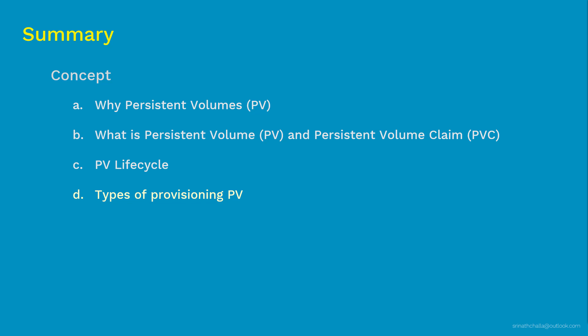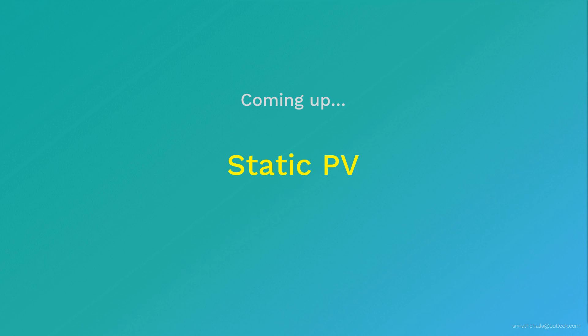Finally, we discussed two types of provisioning: static and dynamic. In static provisioning, the persistent volume must be created before the persistent volume claim. In dynamic provisioning, persistent volumes are created simultaneously when the PVC is created. This comes to the end of this video. Next we'll discuss static provisioning of persistent volumes — covering what it is, how it is created, and a complete demo. The link to that video is in the description below. Thank you for watching and I hope to see you in the next video.